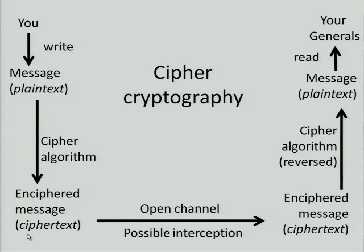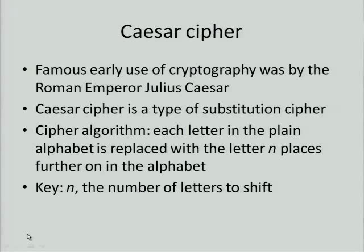A famous early example of cryptography was by Roman Emperor Julius Caesar. This wasn't the earliest, but it was an early one, and one that has a cipher named after him. A Caesar cipher is a type of substitution cipher. The way you perform a Caesar cipher is that every letter in the plain text alphabet is replaced by a letter N places along to give the cipher alphabet. The key in this case is N — the number of letters that you've shifted by.